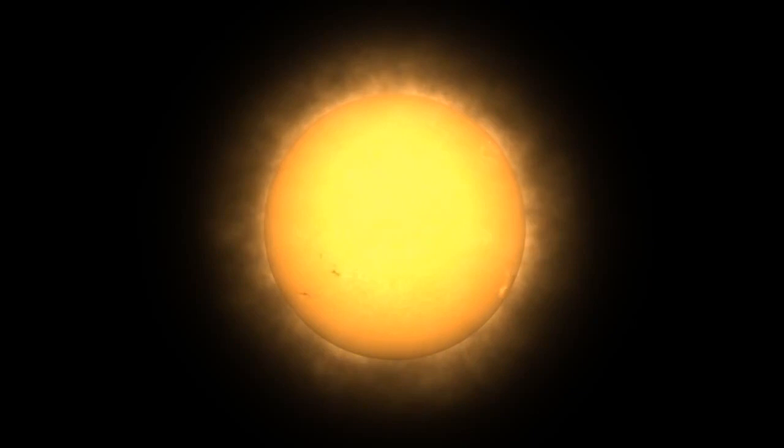During one cycle, the number of sunspots, a good indicator of solar activity, goes from low to high and back down to low.